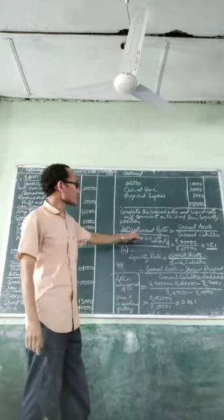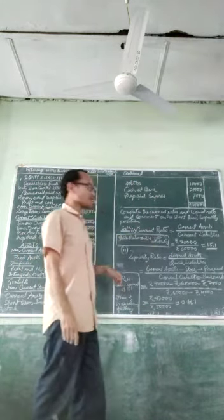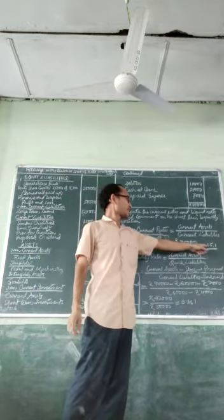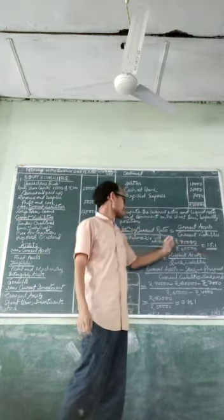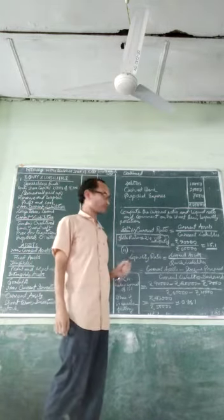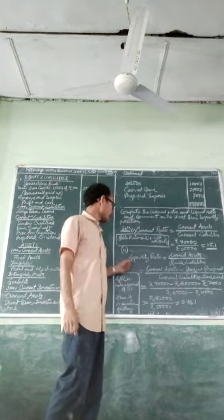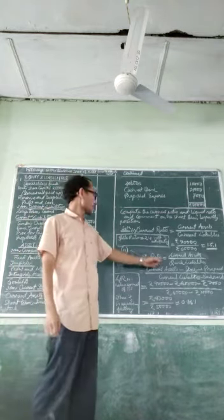So, commenting on this ratio: the ideal current ratio is 2 is to 1. Here, the computed current ratio is 1.5 is to 1. That is, the current ratio is not satisfactory in the present case. Moving on to the next: liquidity ratio.